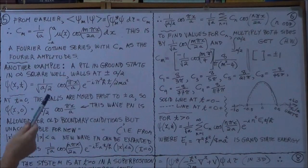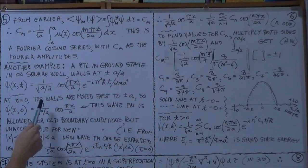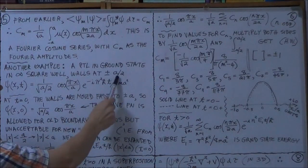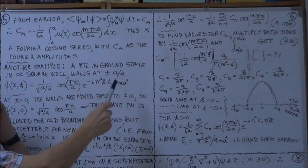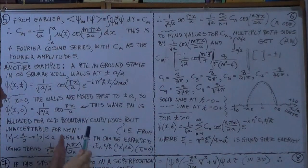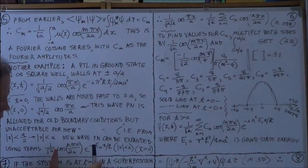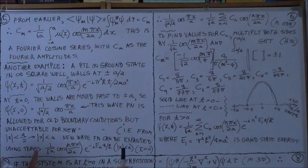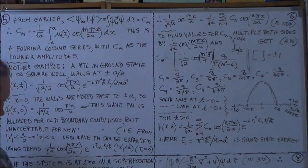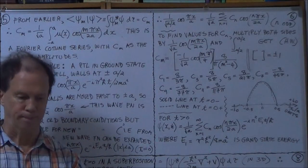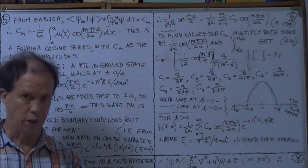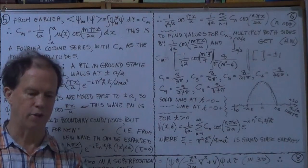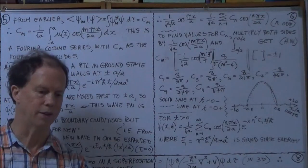So, now, what happens now is that very quickly, these walls that existed at x is plus or minus a over 2, very suddenly, the width goes back to what we're talking about before, to plus or minus a. So, in other words, the width of your potential well suddenly doubles in size again. So, it's gone from, like, a over 2 back to a, plus or minus a, right?